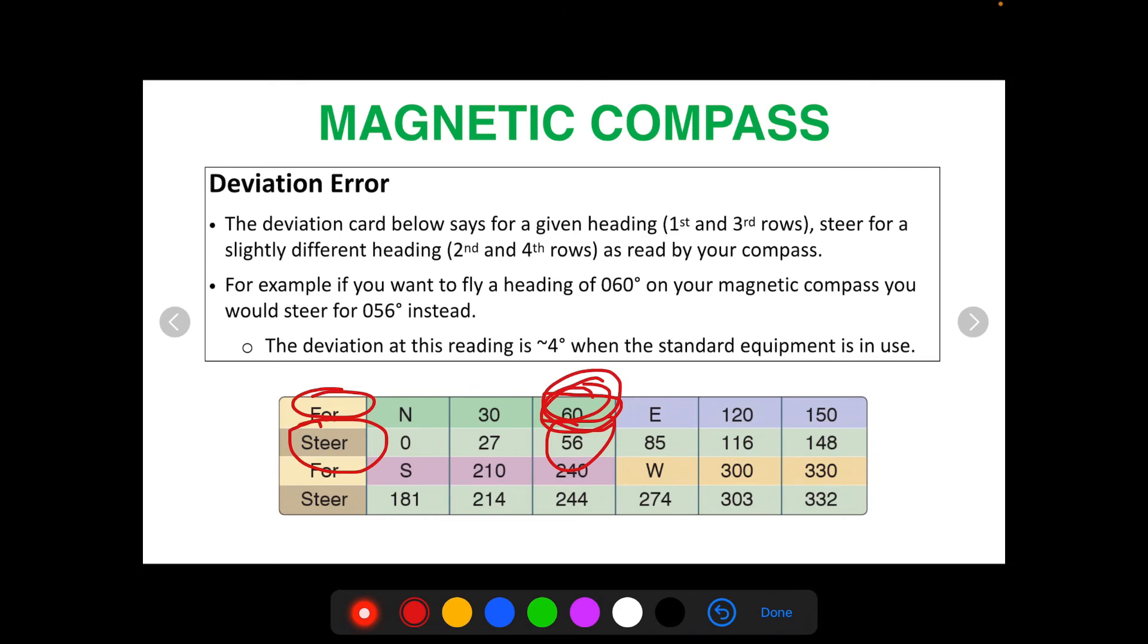Okay, so that was a quick one on deviation, hope you guys understood it. It's a quick and easy one in terms of these compass errors, but if you didn't and you have any questions, please comment below.